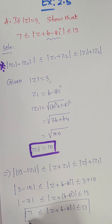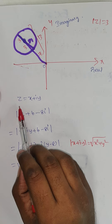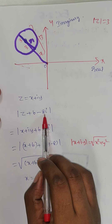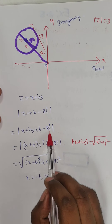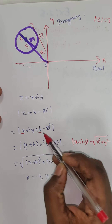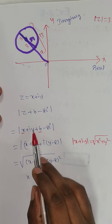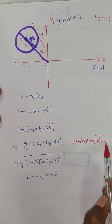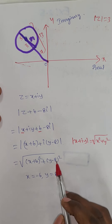Now we draw the diagram for this proof. Taking z equal to x plus iy, the expression mod of z plus 6 minus 8i becomes mod of x plus iy plus 6 minus 8i. Separating real and imaginary parts: real part is x plus 6, imaginary part is y minus 8, so we get mod of (x plus 6) plus i(y minus 8), which equals root of (x plus 6) squared plus (y minus 8) squared.